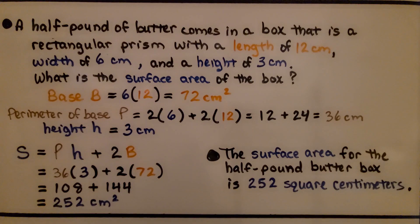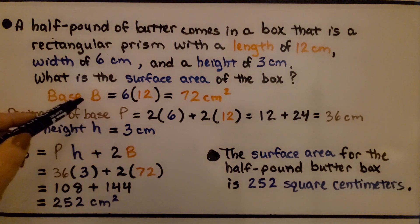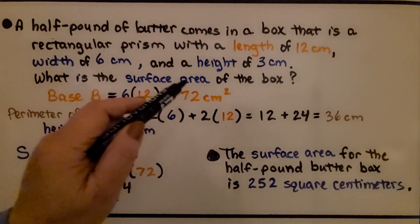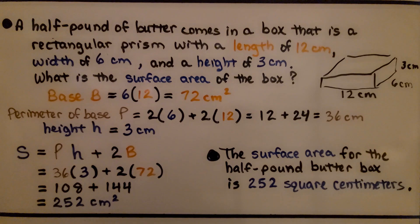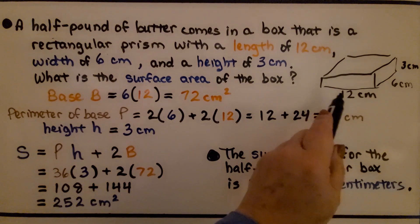A half pound of butter comes in a box that is a rectangular prism with a length of 12 centimeters, width of 6 centimeters, and a height of 3 centimeters. What is the surface area of the box? We're going to find our base B, and it might help to draw a quick picture of this box.